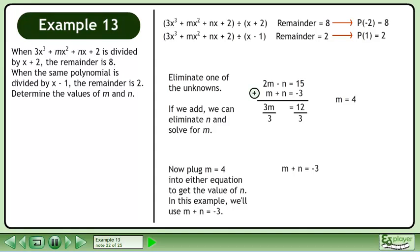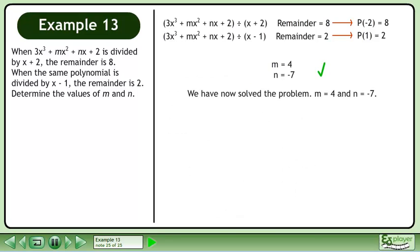Now plug m equals 4 into either equation to get the value of n. In this example, we'll use m plus n equals negative 3. Replace m with 4. Subtract 4 from both sides of the equation to get n equals negative 7. We have now solved the problem, m equals 4 and n equals negative 7.